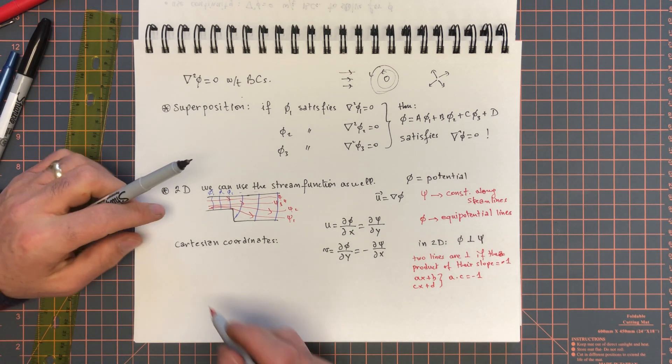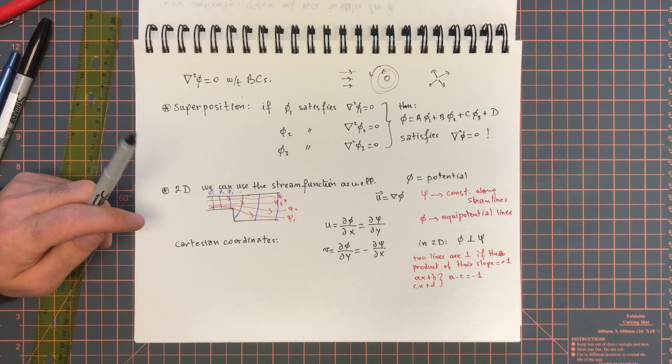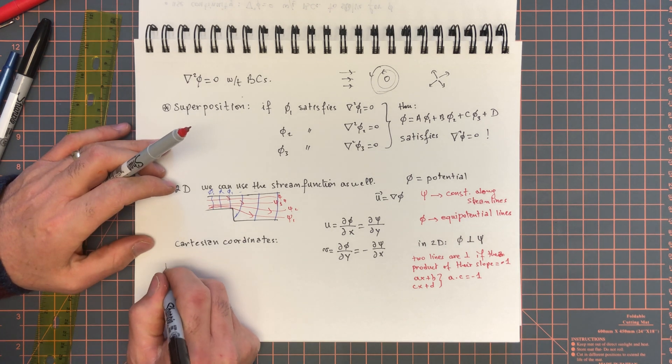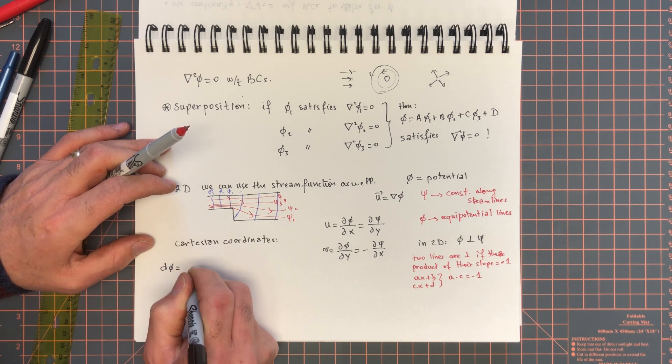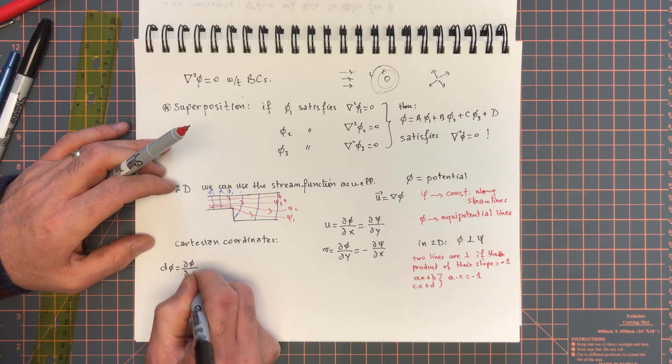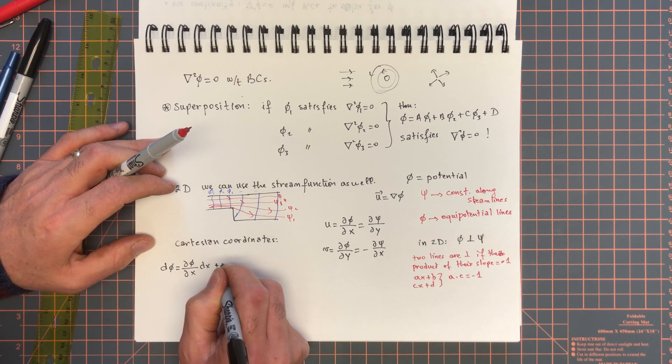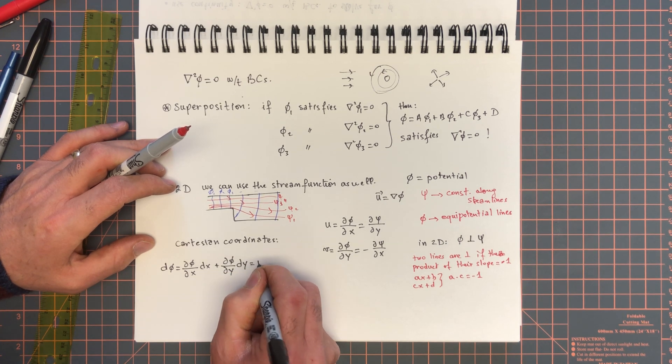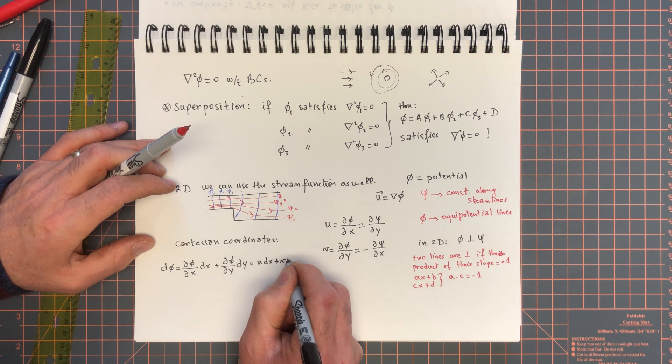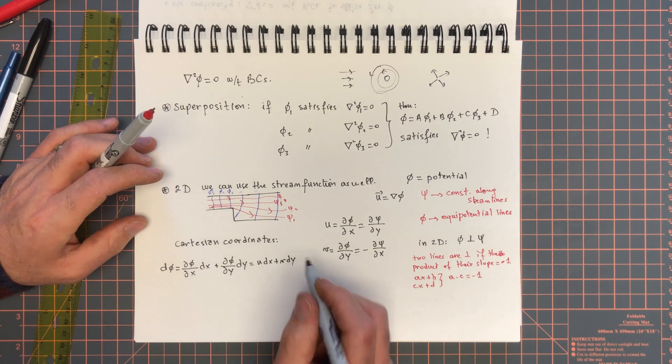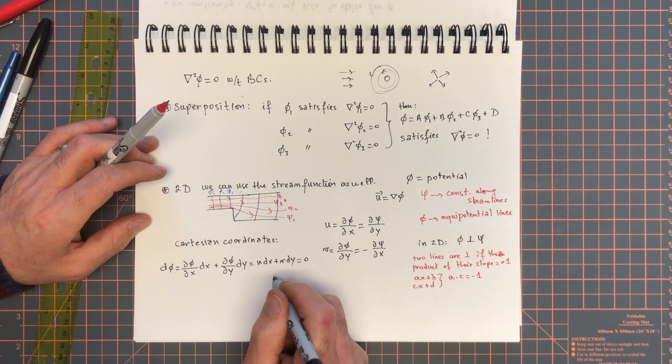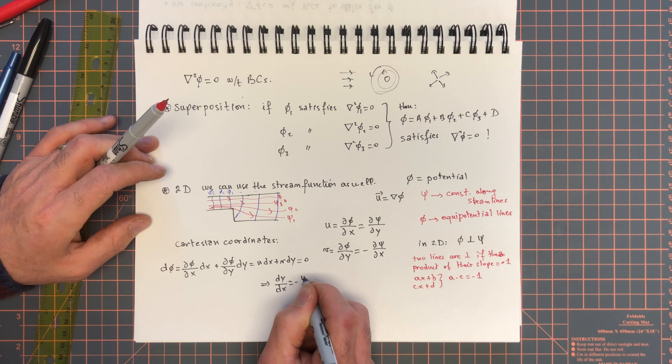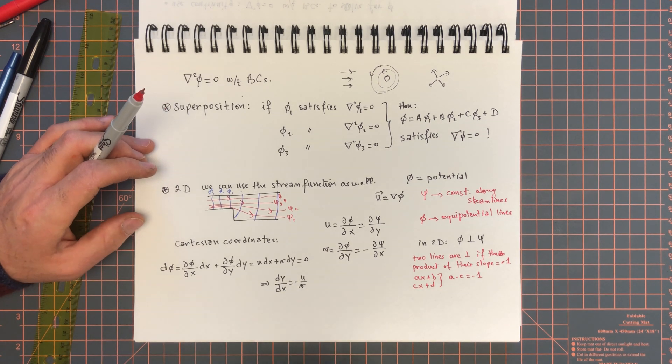So, now, we can take a streamline and an equipotential line. And so, notice that d phi, or the stream, for the potential flow, is, for the velocity potential, d phi by dx dx plus d phi by dy dy, and that's equal to u dx plus v dy. Now, along an equipotential line, that's equal to zero, so that gives us that dy by dx is equal to minus u over v. That's kind of the slope of the line.